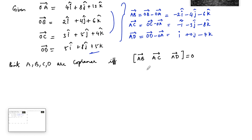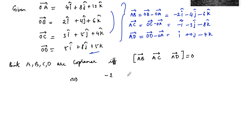So we can find the scalar triple product as the determinant of these three vectors — AB, AC, and AD — which must equal 0. The scalar components are: AB = (−2, −4, −6), AC = (−1, −3, −8), and AD = (1, 0, −7).